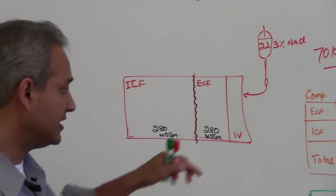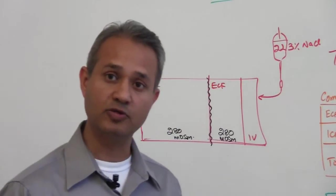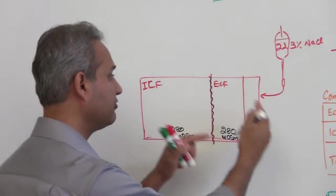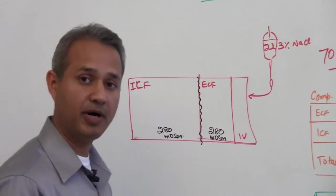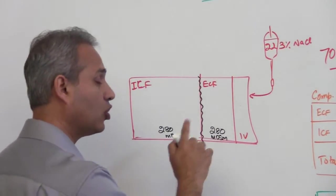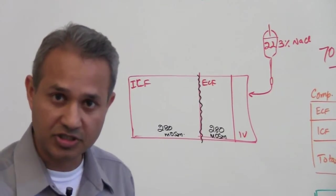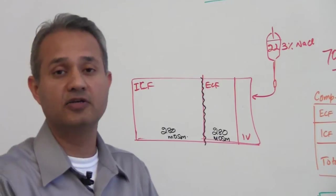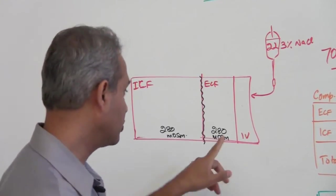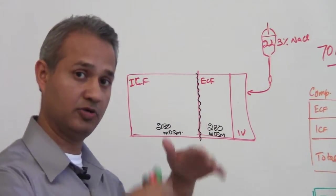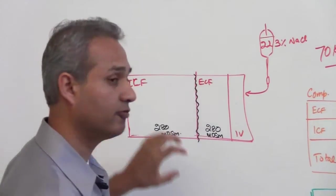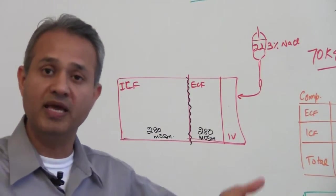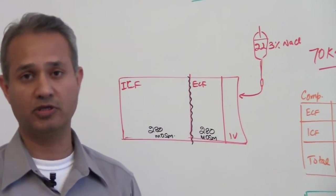And if that is not the case, as we would see as we progress through this example, water would shift from one to the other compartment in accordance with the water concentration and it would correct the osmolarity. It would not correct the osmolarity by reducing or increasing it, but water would move from one compartment to the other compartment to make the osmolarity equal in both compartments.